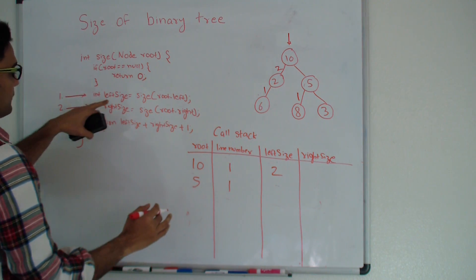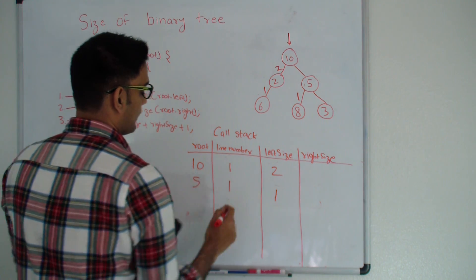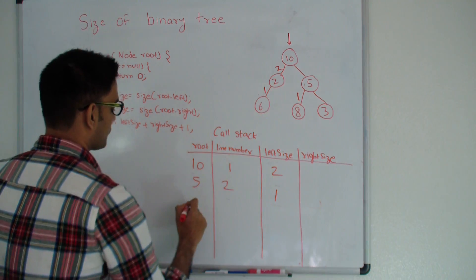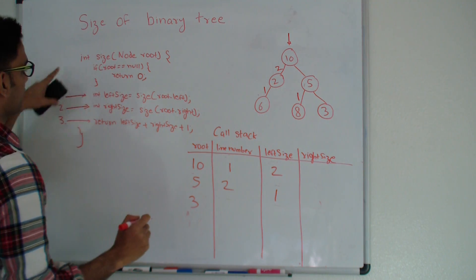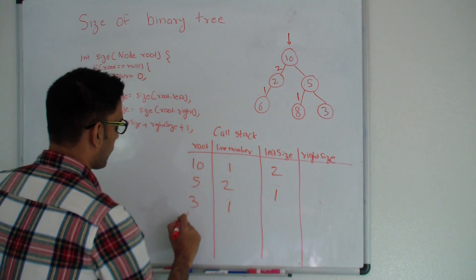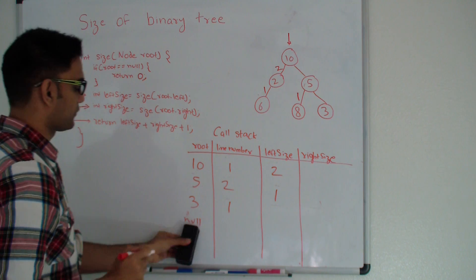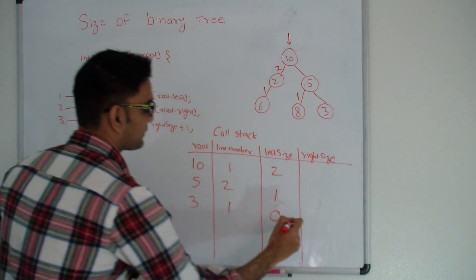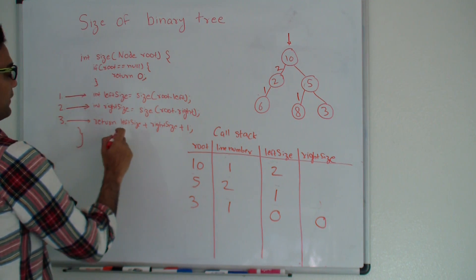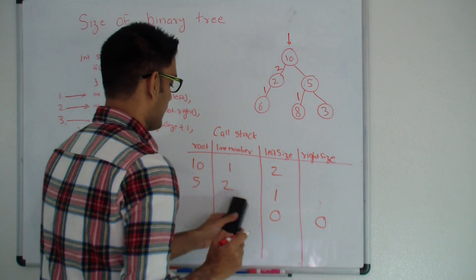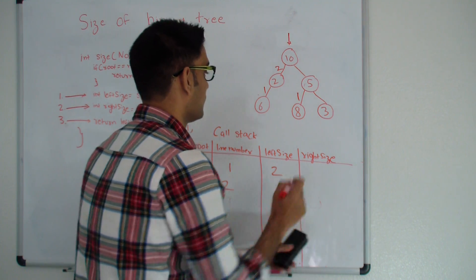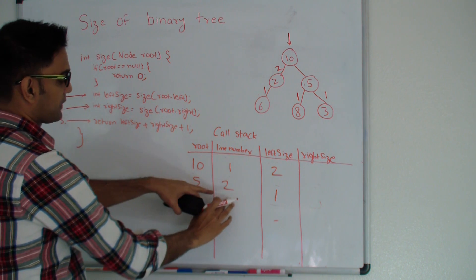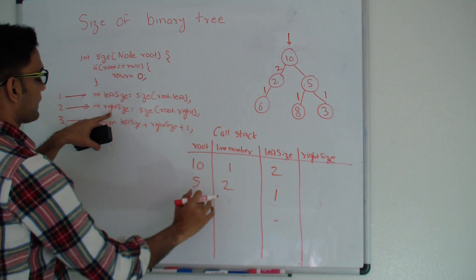So node 5's left size is 1. Now node 5 goes into recursion again from statement number 2 to its right side, which is node 3. Node 3 is not null, so it goes into recursion from line number 1 — its left is null, returning 0, and its right side is also 0. So node 3 returns 0 + 0 + 1 = 1 to node 5. Since we went into node 3 from statement number 2, node 5's right size is 1.